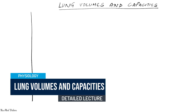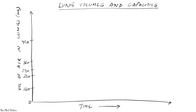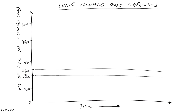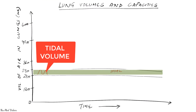Let's discuss lung volumes and capacities, which is probably the most important topic from respiratory physiology. The first thing we need to understand is the normal amount of air that we inspire and expire — that's called tidal volume. It's about 500 milliliters of air that we normally inspire or expire in a breath.